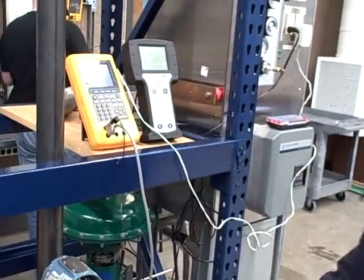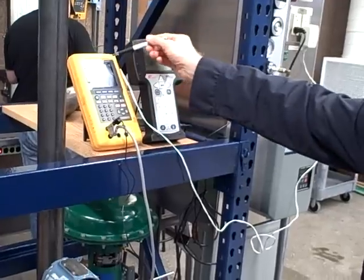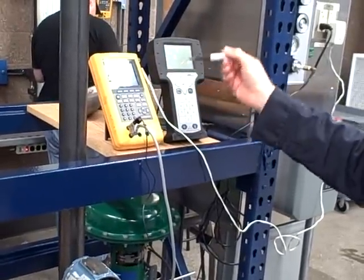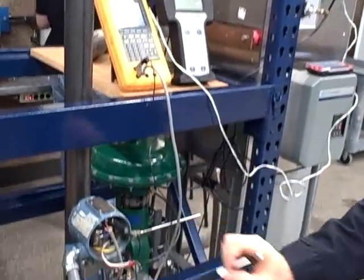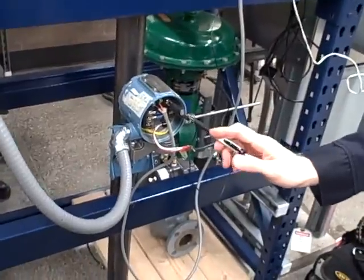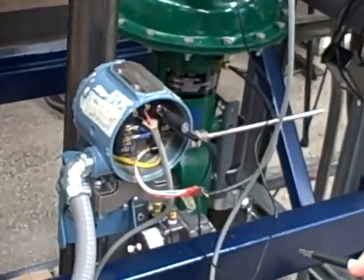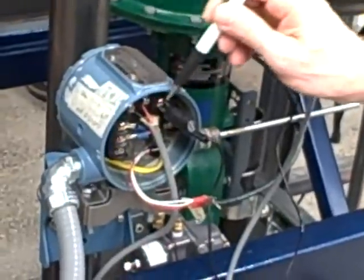We're going to set up a Fluke 744 Documenting Calibrator to simulate an RTD. Our transmitter is a Rosemount 3144 transmitter, and it's currently set up to take in a three-wire RTD signal.